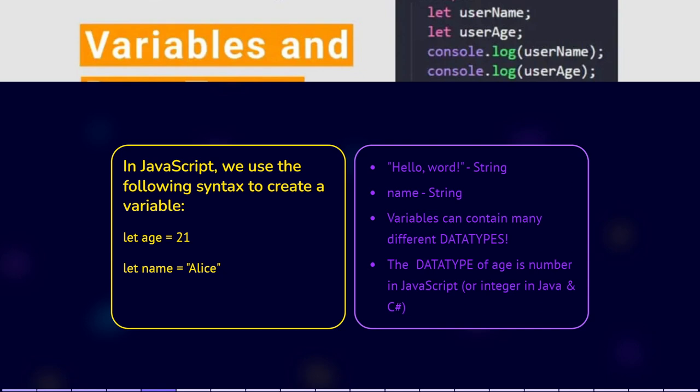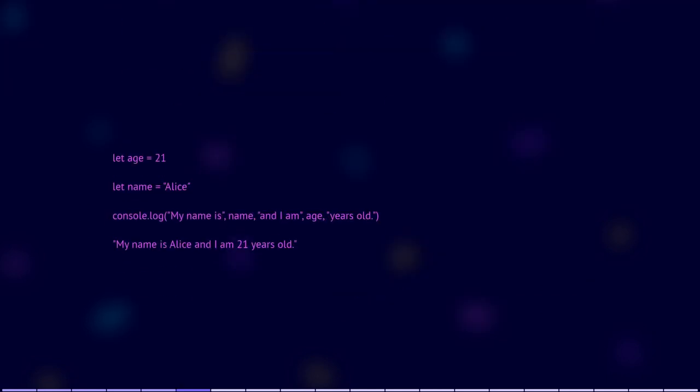Once you've assigned values to variables, you can use them in your code. For example, console.log('My name is ' + name + ' and I am ' + age + ' years old') will give: my name is Alice and I am 21 years old.